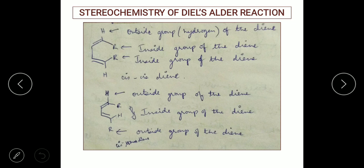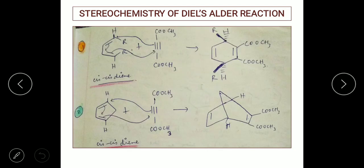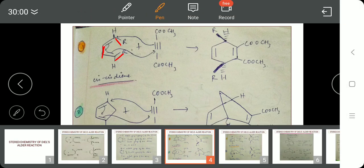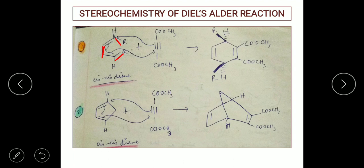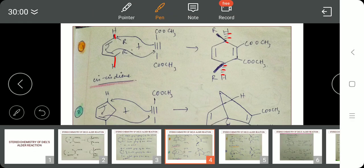Let us see some examples. The first example is a cis-cis diene because R and CH2 are on the same set at both ends. We have a dienophile as well. The Diels-Alder reaction is a pericyclic reaction and the product is formed in a concerted manner. Talking about the stereochemistry of hydrogen: hydrogens are outside of the diene, and outside groups are always below the plane, so they are written as dashed.